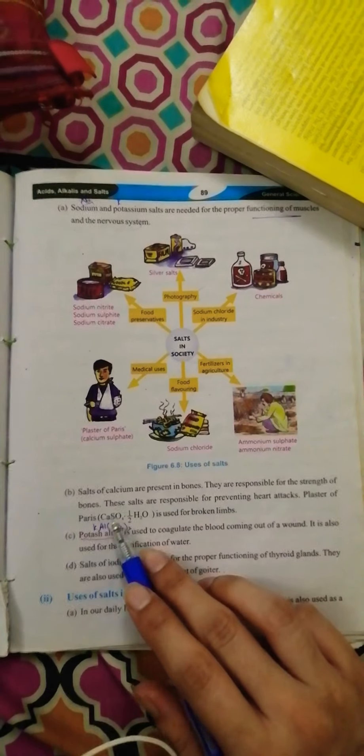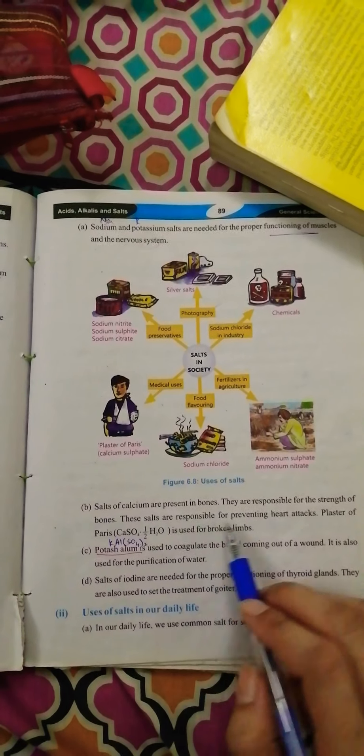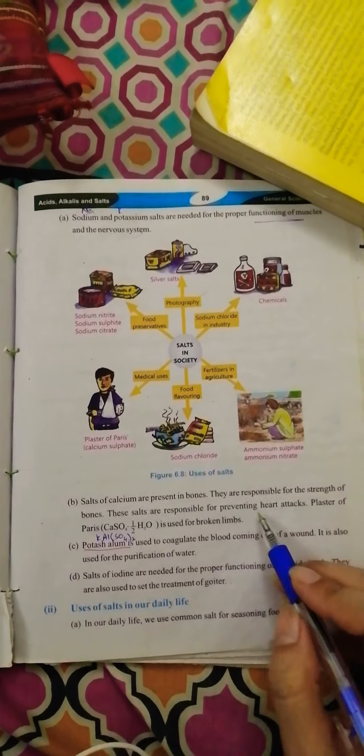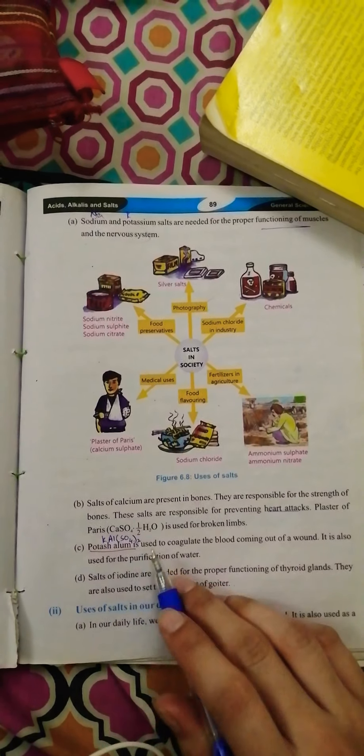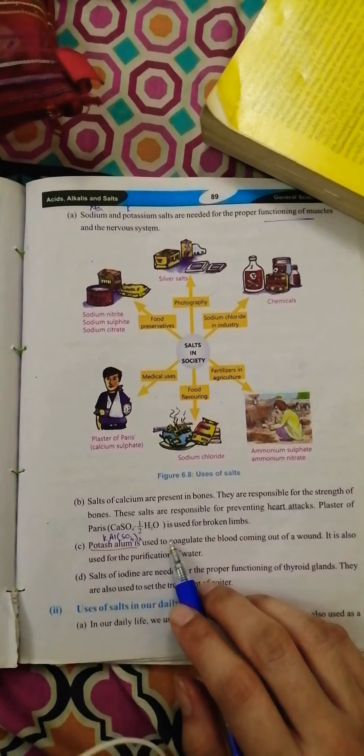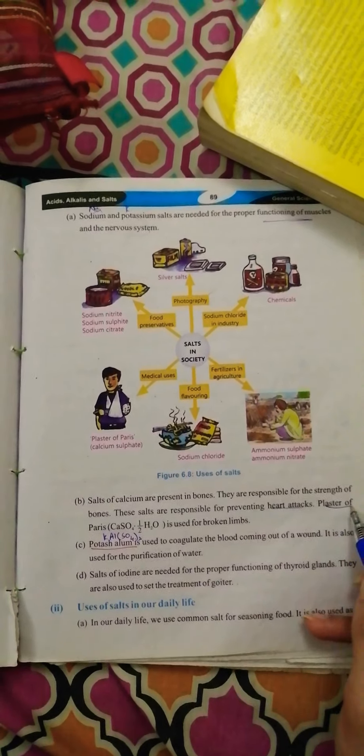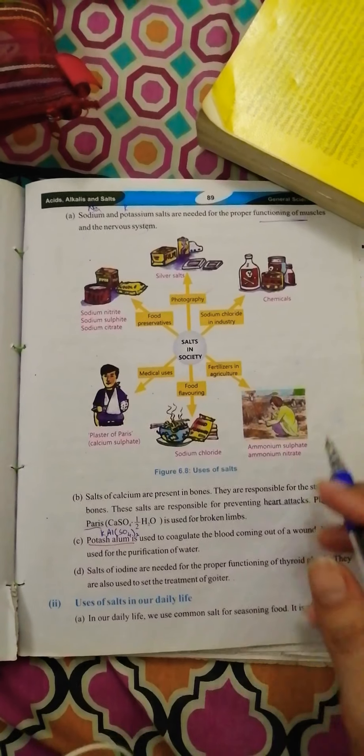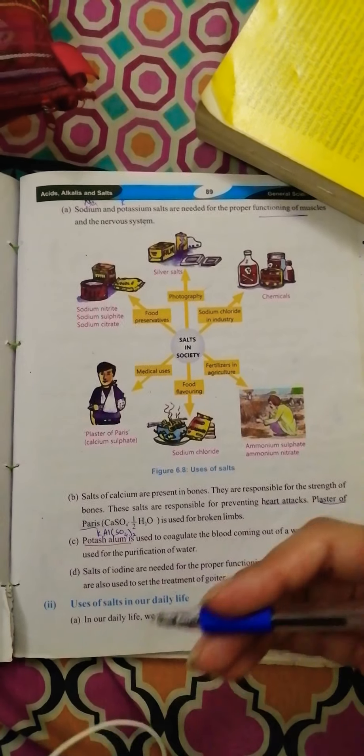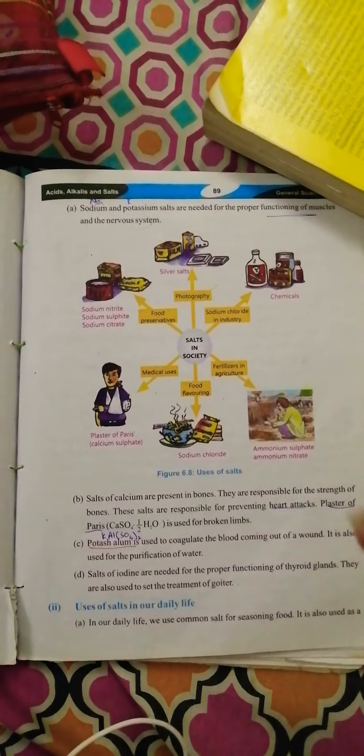Calcium salts are responsible for preventing heart attack. Plaster of paris CA SO4.1/2 H2O is used for broken bones. When you have a hand or leg injury, they bandage around your bone - that is known as plaster of paris.